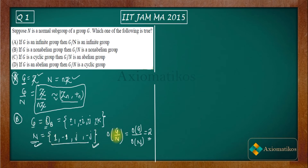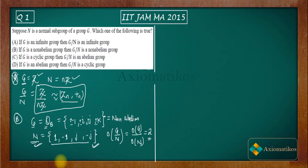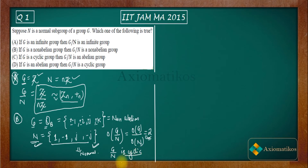So G is the quaternion group, which is non-abelian, and N is a normal subgroup with index two. According to option B, G by N should be non-abelian. But the order of G by N is two, which is a prime order. Every group of prime order is cyclic, so G by N is cyclic — which means it is abelian. Therefore it cannot be non-abelian, and option B is incorrect.